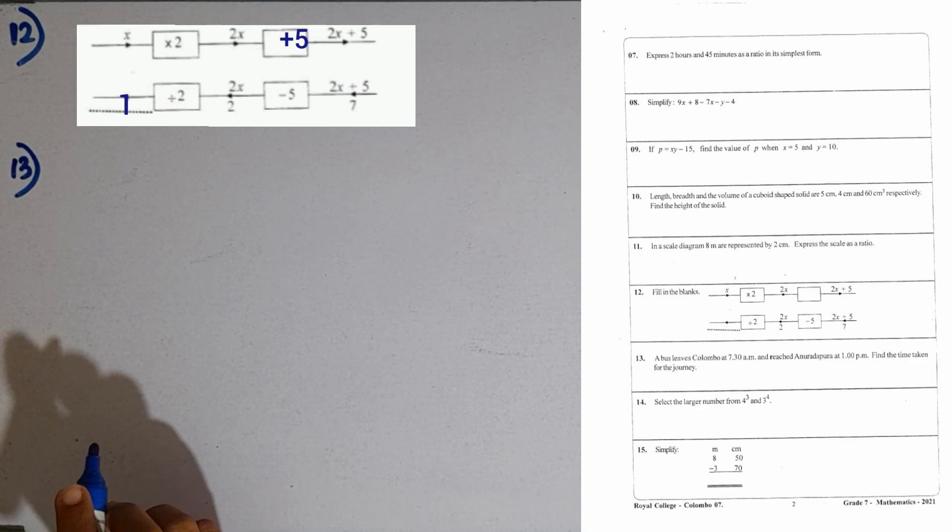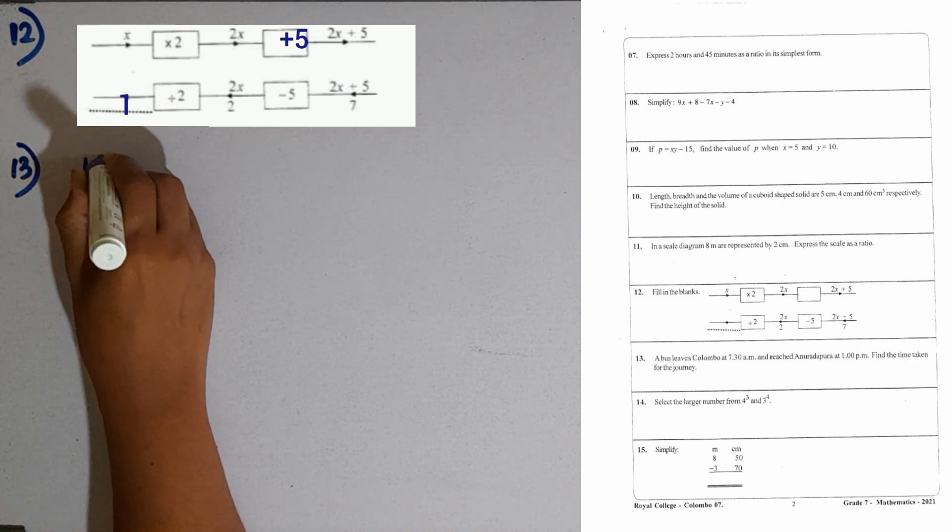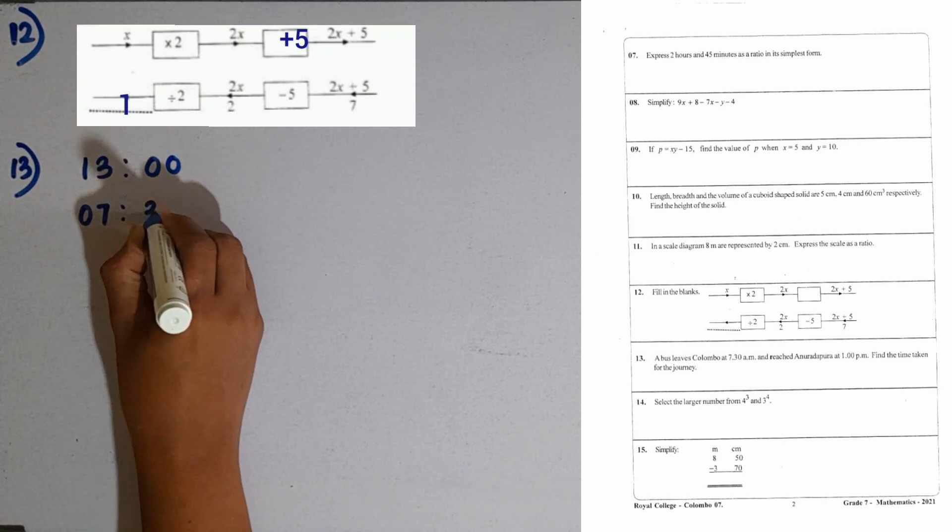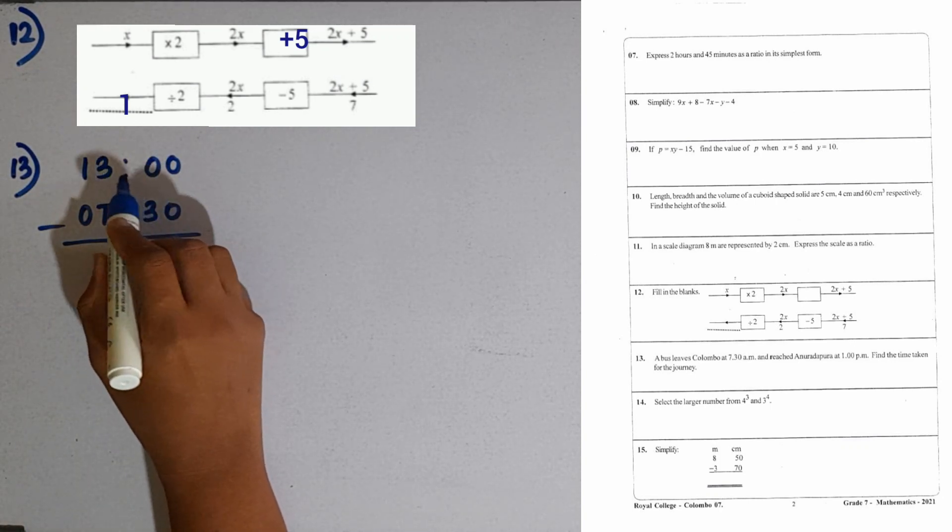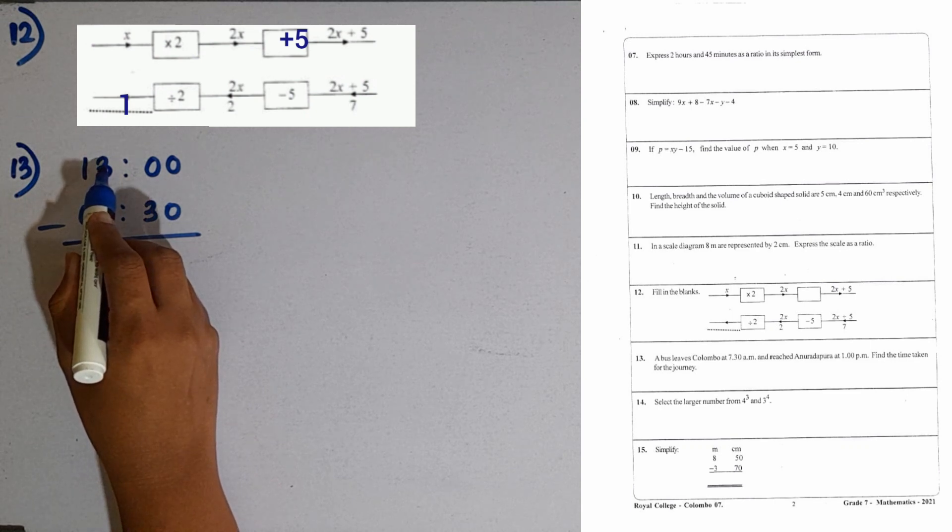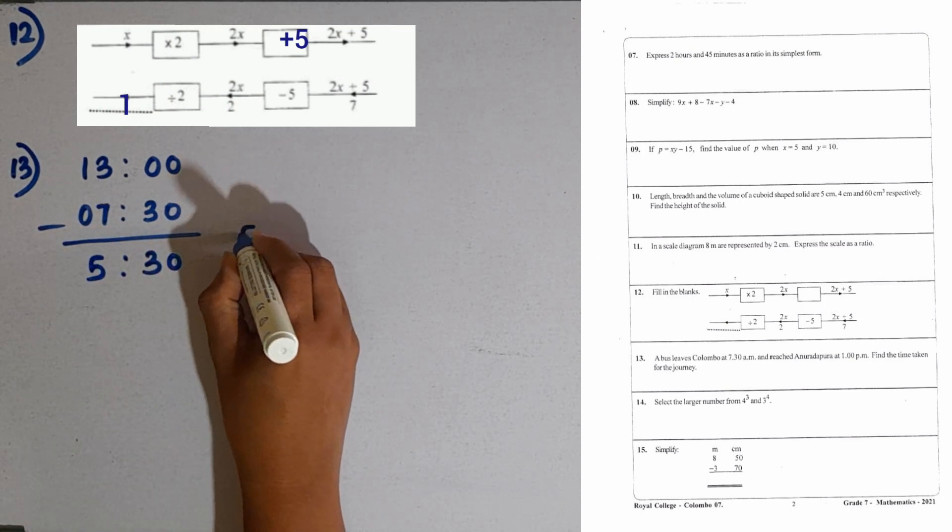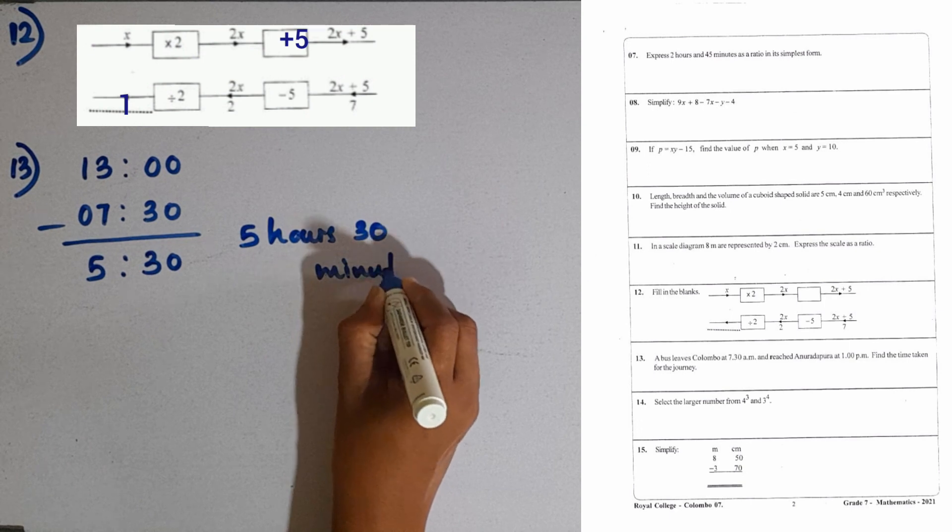Question number 13. A bus leaves Colombo at 7:30 AM and reached Anuradhapura at 1 PM. Find the time taken for the journey. 1 PM means in standard form 13 hours. Then, 7:30 AM can be written as 7 hours 30 minutes. Then, we have to subtract this amount from 30. 60 minus 30. We are taking 1 hour from this side, which is 30 minutes. Here the remaining is 12. 12 minus 7 is 5. Then, the bus has taken 5 hours 30 minutes for the journey.